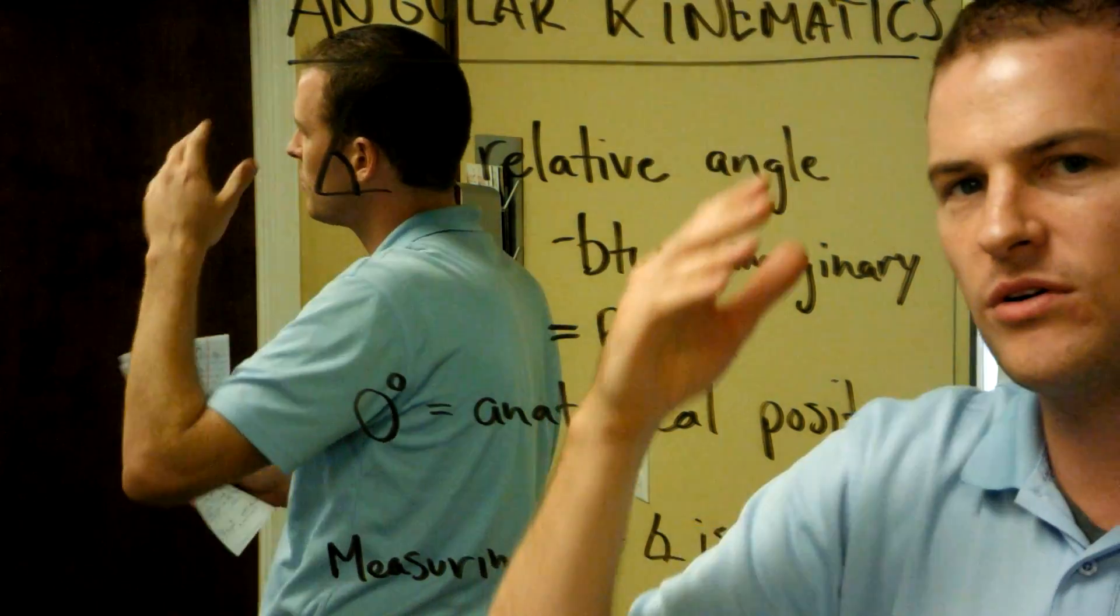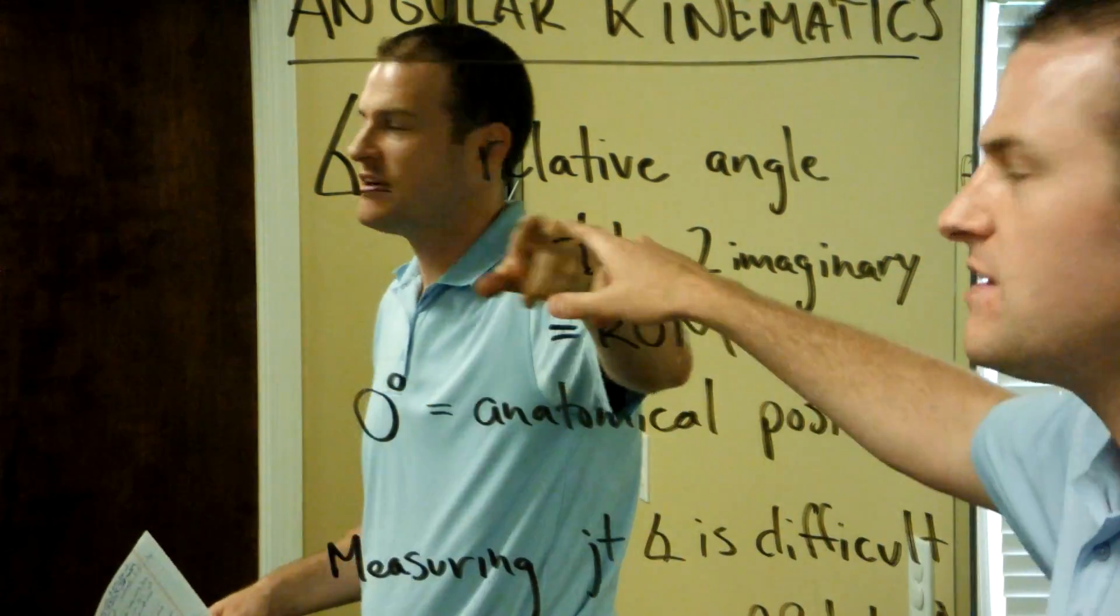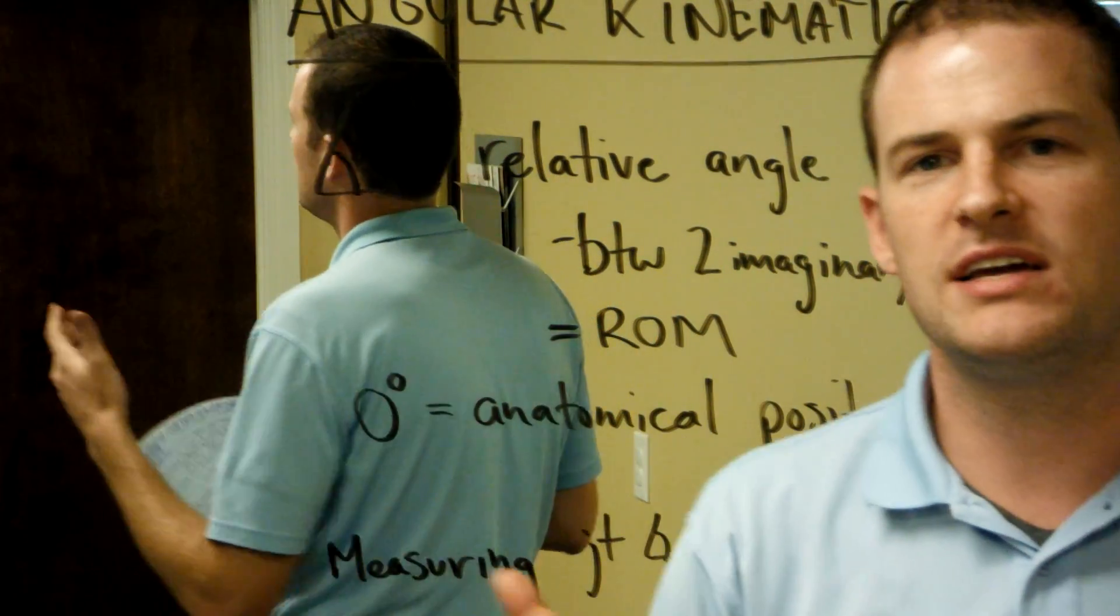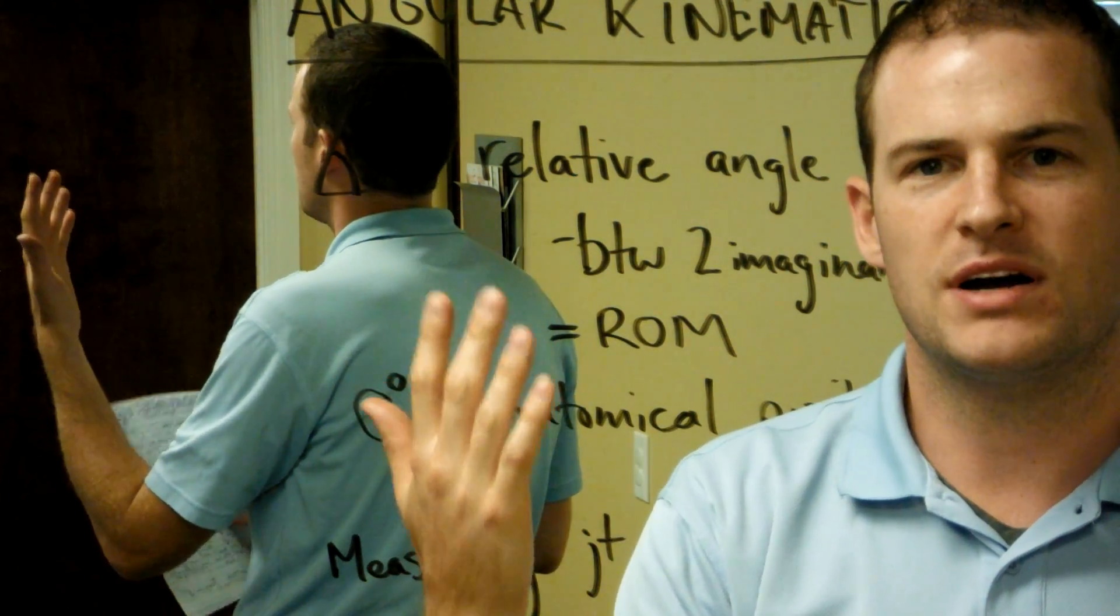So whether it's the ulna and the humerus as it goes through its progressive motion, or the tibia and the femur of the knee, when we talk about a relative angle we're talking about the shifting of two imaginary lines that would intercept through a single bone.